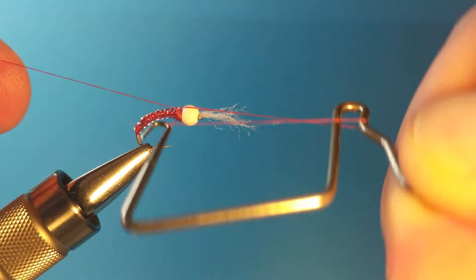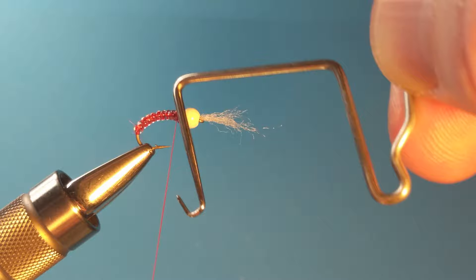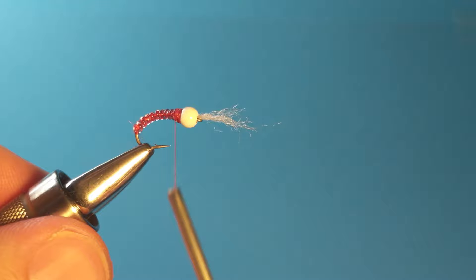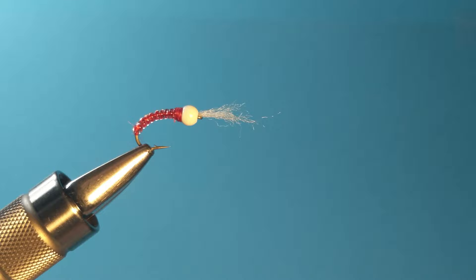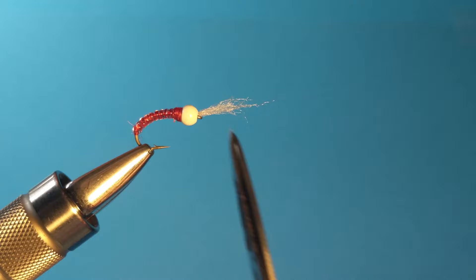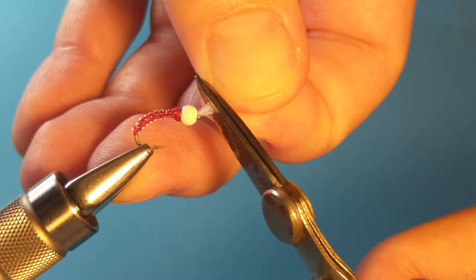Perfect. Pull it tight. Snip that thread off. And then finally, to finish this fly, we're going to snip this white off. It should be about as long as the diameter of the bead. It's a little longer. It's not going to hurt anything. And there we have it.